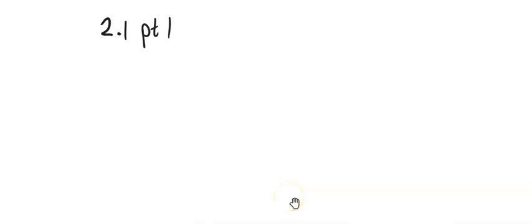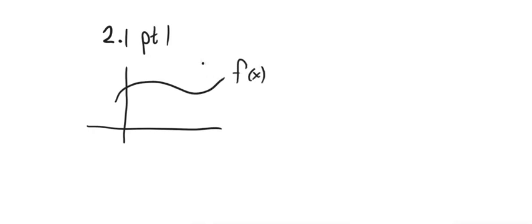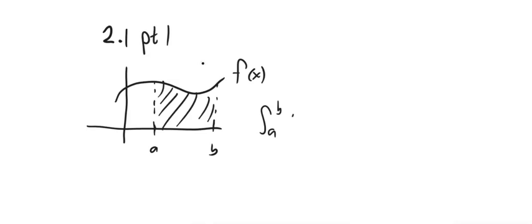This is Math 152. We are going to look at the first part of section 2.1, which is about finding the area between two curves. If I had some curve f and went from a to b, we know that we could take the integral and get the area under that curve. The integral from a to b of f of x dx gives us the area underneath the curve.